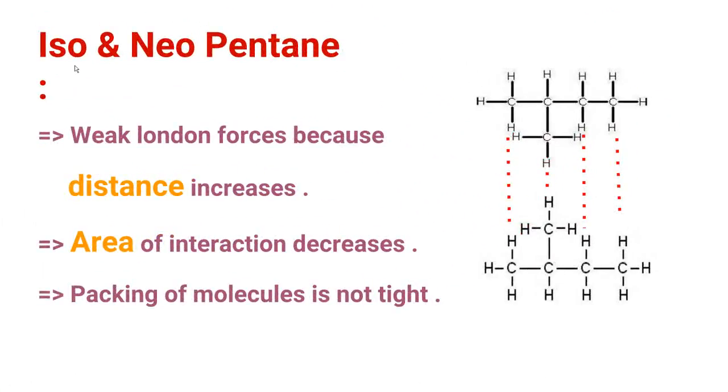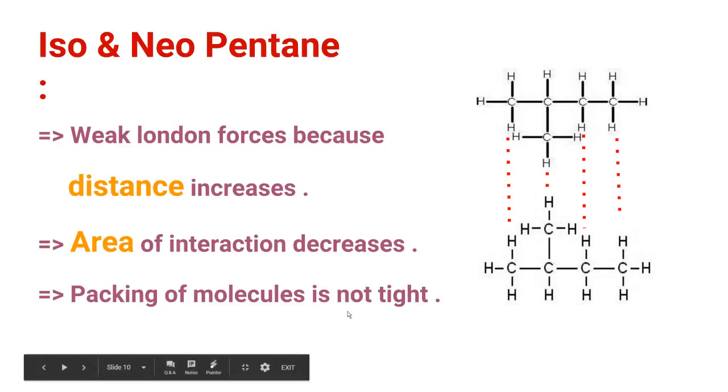But in this case, iso and neopentane, you can see that weak London dispersion forces are there because distance increases because of branching. The area of interaction decreases because packing of molecules here is not tight. You can see here because of branching, the area of interaction decreases.